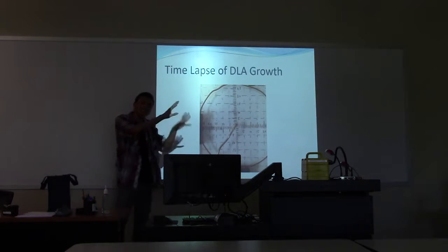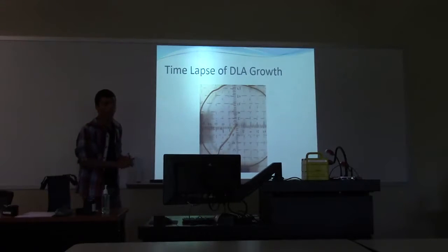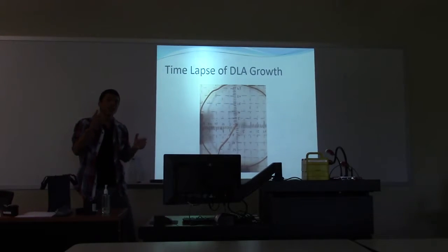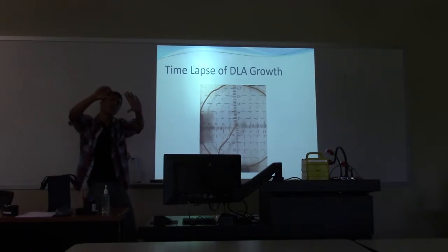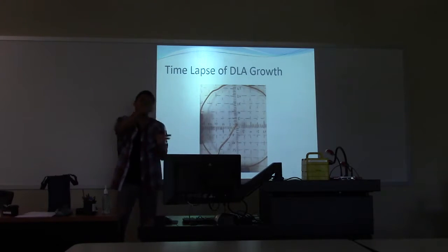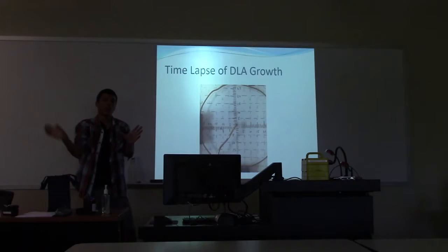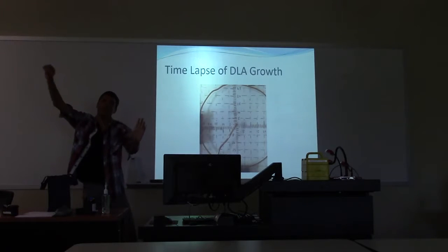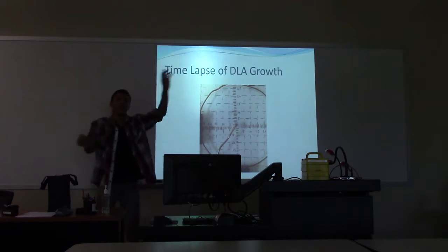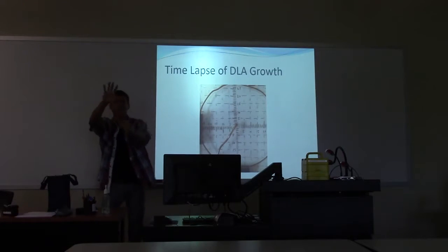Why was it branching like that? Why doesn't it just grow like a solid disk? It starts out with a circle and copper ions stick to it. If you have a bump on this circle then you have more surface area there than on other parts of the circle per unit length. So if you have more surface area per length, you're going to get more particles glomming on to this newly created bump, and so you get something that grows out.